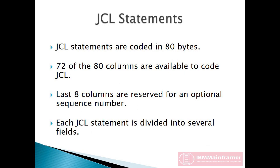JCL statements are all based on 80-byte records, but only 72 of the 80 columns are available to code JCL because columns 73 through 80 are ignored by ZOS and are usually used for sequence numbers. That is, the last 8 byte columns are reserved for an optional sequence number.